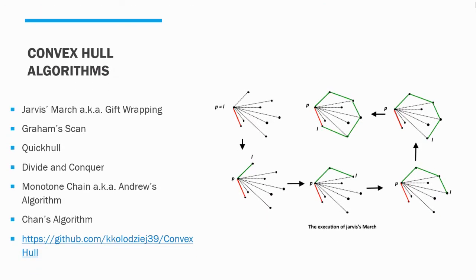Next, let's look at some of the algorithms. I listed a lot of different algorithms on the left, including Jarvis's March, Graham Scan, QuickHull, Divide and Conquer, Monotone Chain, and Chan's Algorithm. Specifically for this presentation, we're going to get a deeper dive into Jarvis's March and Graham Scan, as those are the two I personally looked at and implemented. I included a link to my GitHub page at the bottom of this slide if you'd like to check that out.